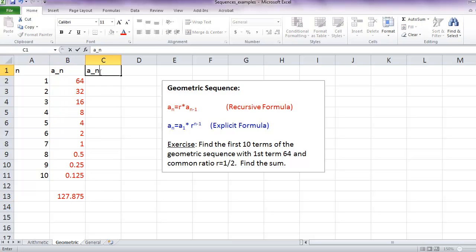We could have also used an explicit formula for the geometric sequence. So this is A1, so that's going to be our 64, times our common ratio, which is 1 half, raised to the power n minus 1.